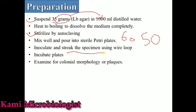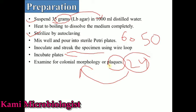After autoclaving, pour the media into petri plates at 60 to 50 degrees centigrade. Then inoculate and streak the bacteria, incubate the plate, and after 24 hours of incubation check the bacterial colony morphology as well as the plaque formation on the media. This is how we prepare and use the media.